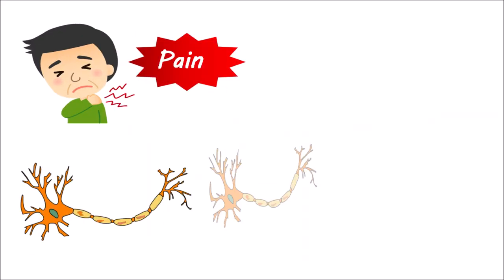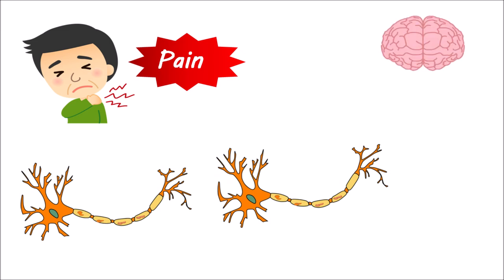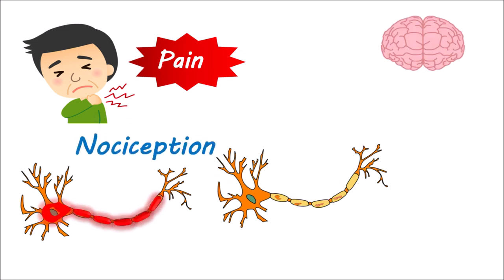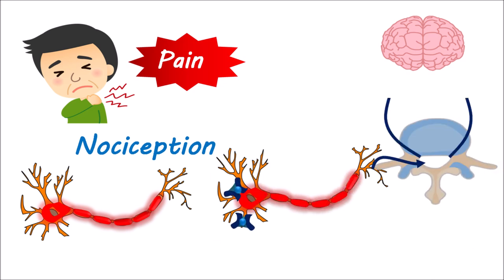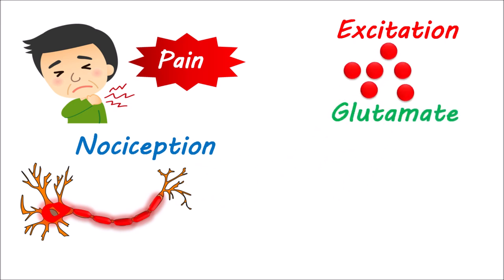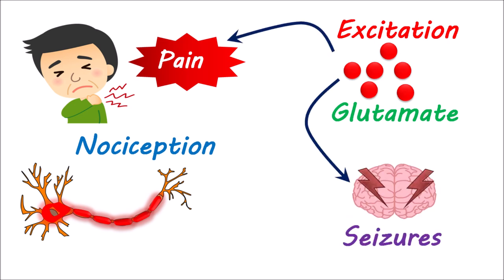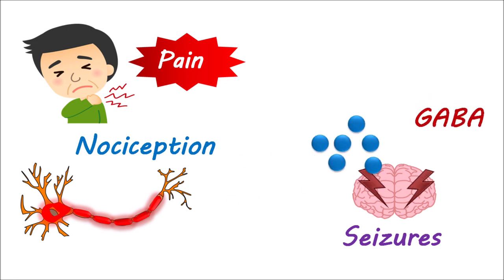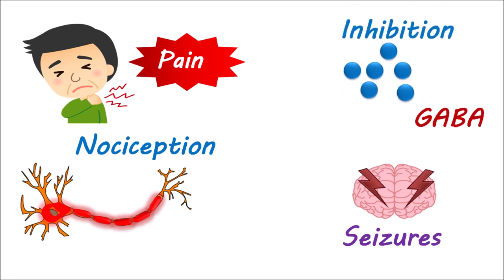Pain is a subjective response carried through the activation of neurons and perceived by the brain. So many mediators are involved in nociception. Some enhance the pain response and others reduce it. Excitation is produced by mediators such as glutamate, which leads to an increased neuronal response that may result in the induction of seizures or the enhancement of pain perception. On the other hand, GABA is an inhibitory neurotransmitter that reduces neuronal activity and thus reduces nociception and seizure induction.